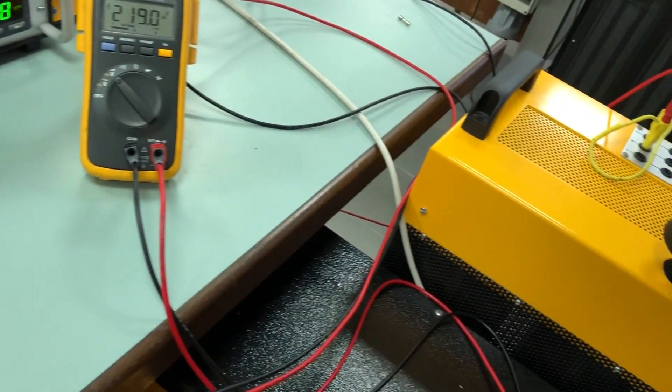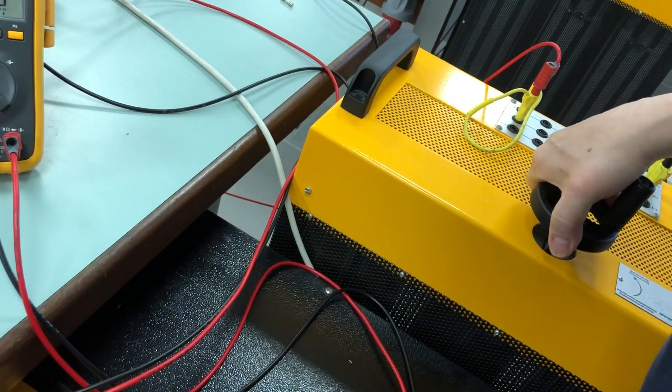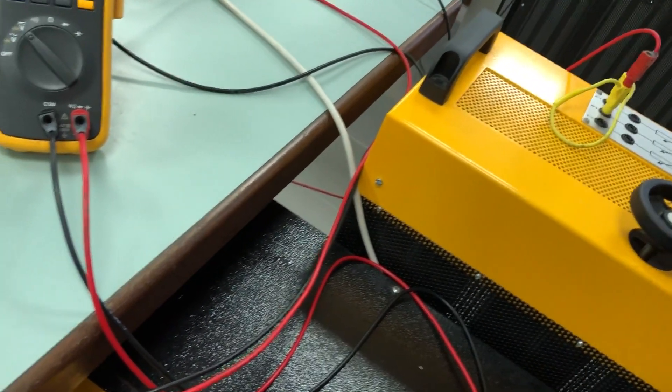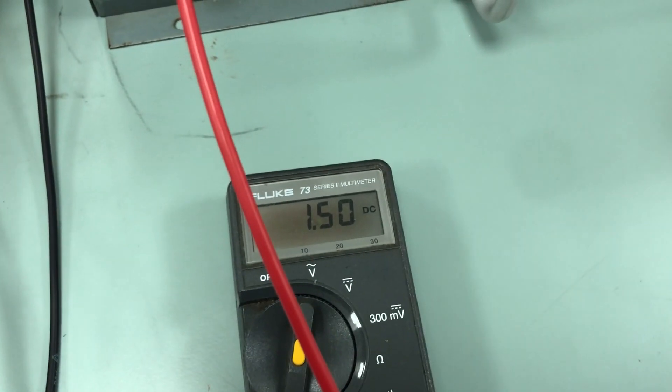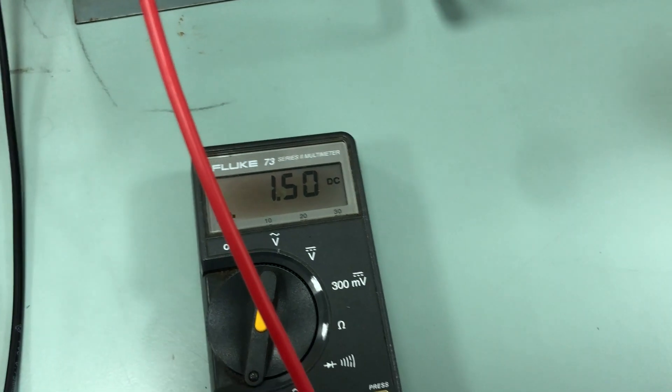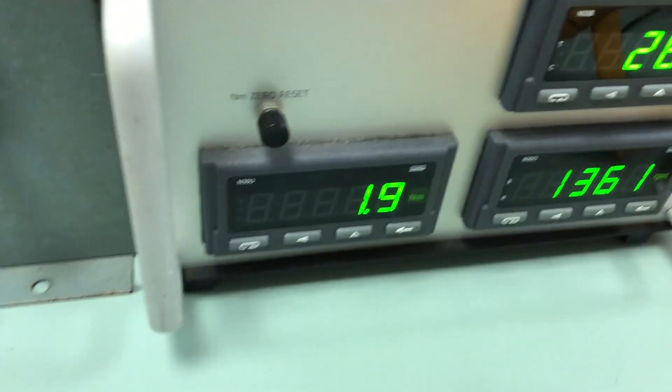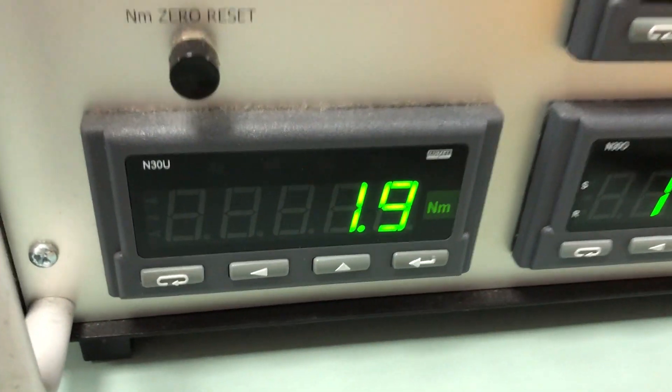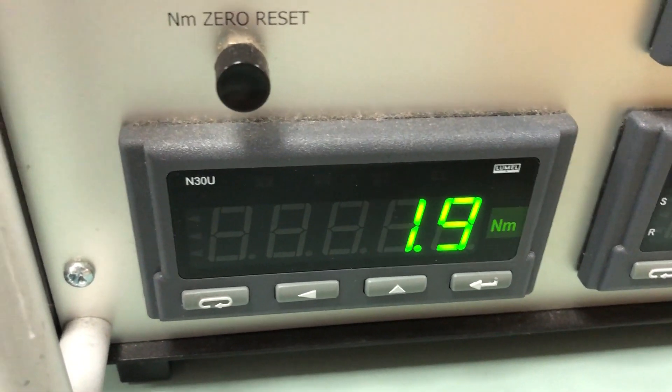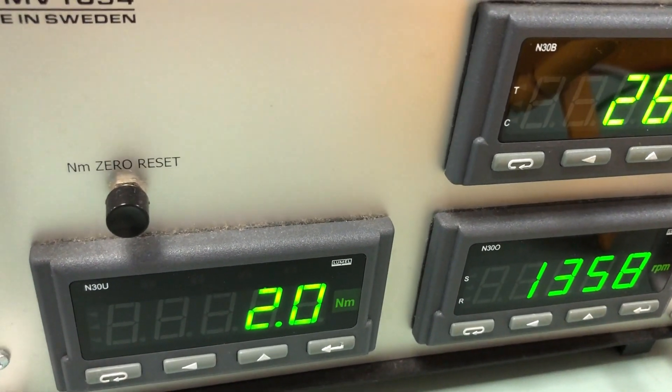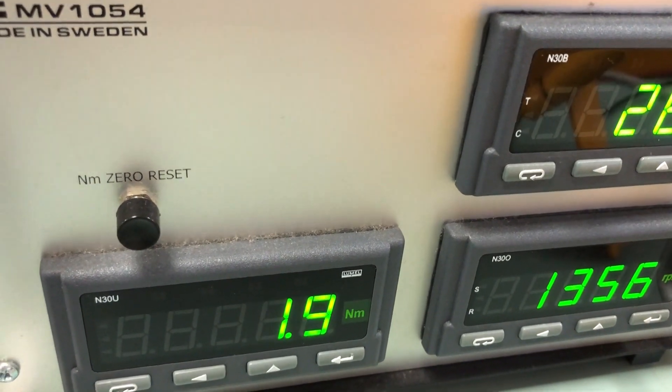Not quite there so this is when you have to increase the load via the load bank. Okay and it's done now it's 1.5. 1.5 armature current therefore take note of the speed and take note of the torque. The torque is 1.9 Newton meter. Speed is 1356.